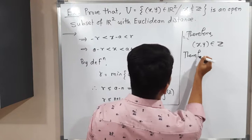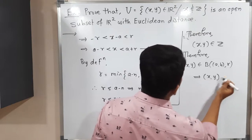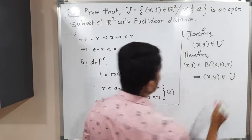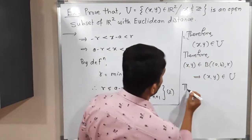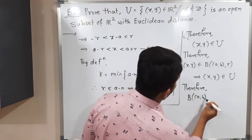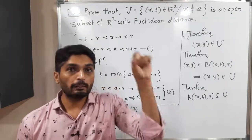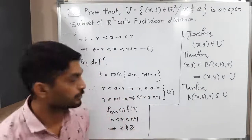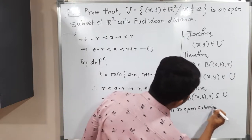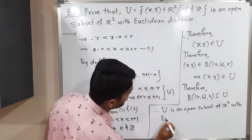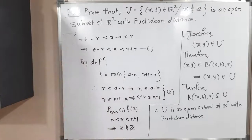Therefore (x, y) belongs to U. We initially took (x, y) from the open ball with center (a, b) and radius r, and proved it is in U. So that ball is a subset of U. We took any arbitrary point (a, b) in U and found a ball around it that is a subset of U. Therefore U satisfies the definition of an open set, and we can declare U is an open subset of ℝ² with Euclidean distance.